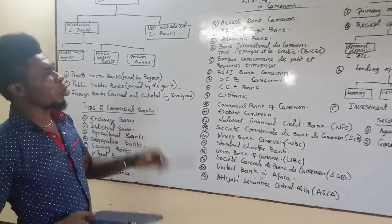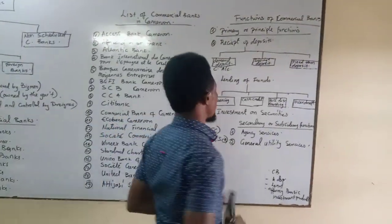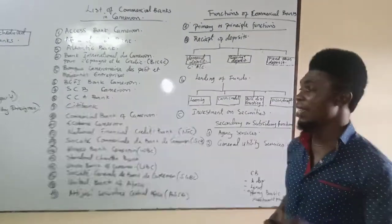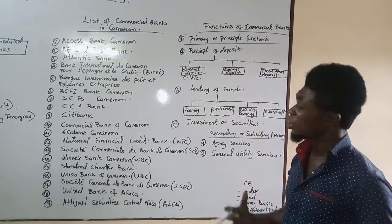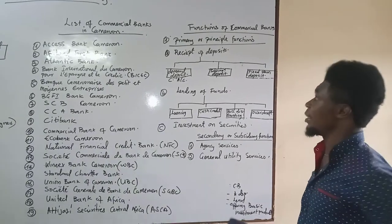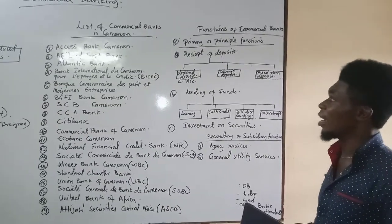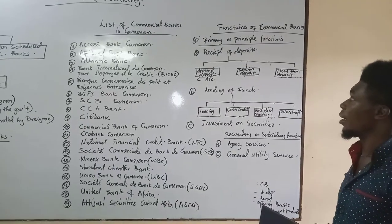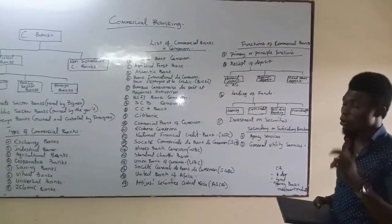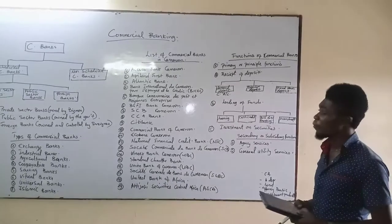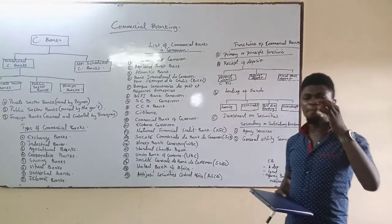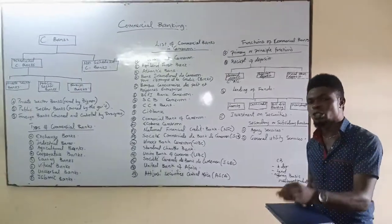What are the functions of commercial banks? Just as in the last lesson, we are going to be discussing the functions of commercial banks. These functions are divided into two: the primary functions of commercial banks, also called the principal or fundamental functions, and the secondary functions of commercial banks, also called the subsidiary functions.